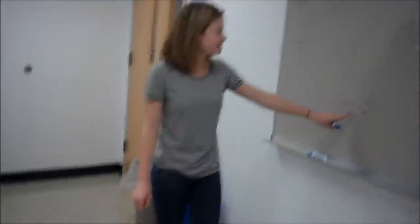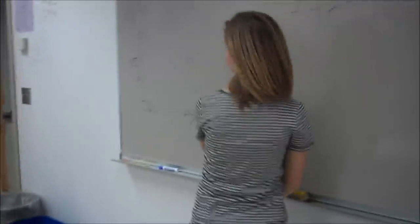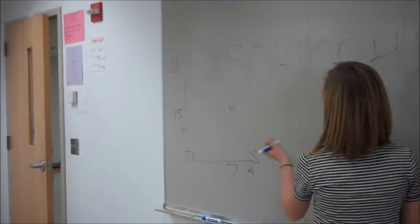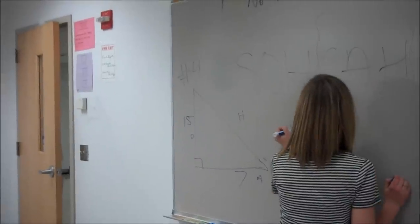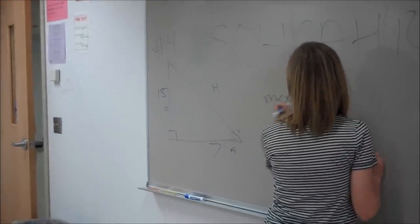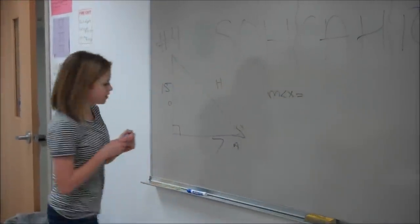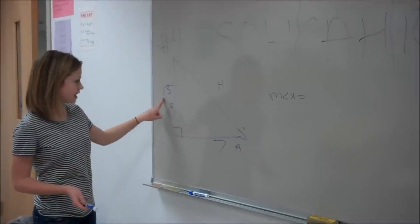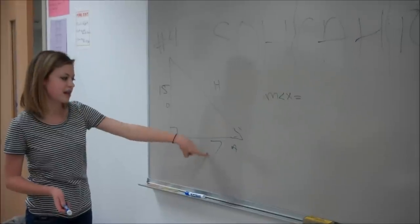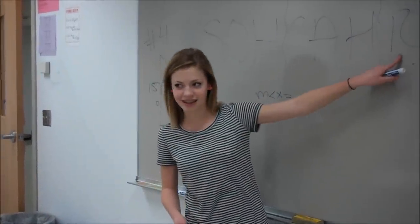Okay, so, Brandon, to start off with number four, you have to look at x — your angle. So you start off, you write down measure of angle x. And then you have to look for the sides. So you're looking at opposite, which is 15, and adjacent, which is 7. So, that would be...?